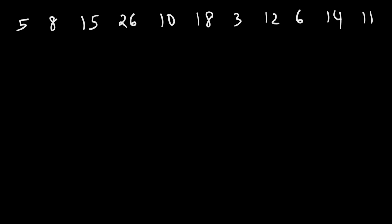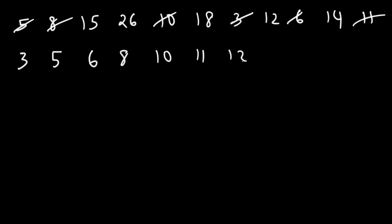So let's go ahead and find the IQR value and let's see if there's any outliers in this list. The first thing you want to do is arrange your numbers in ascending order. So 3 is the lowest number. Next we have 5, then 6, then 8, 10, 11, 11, 12, 14, 15, and then 26.